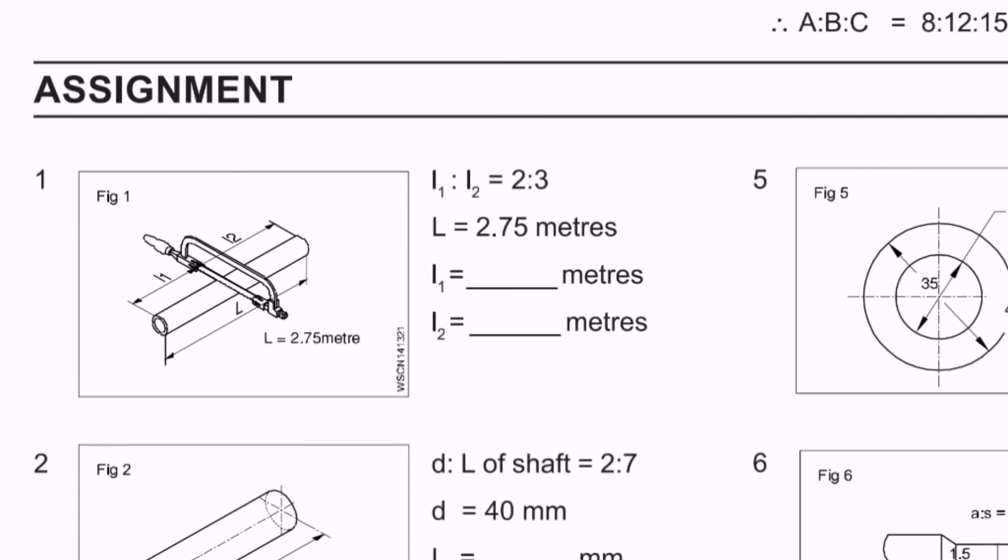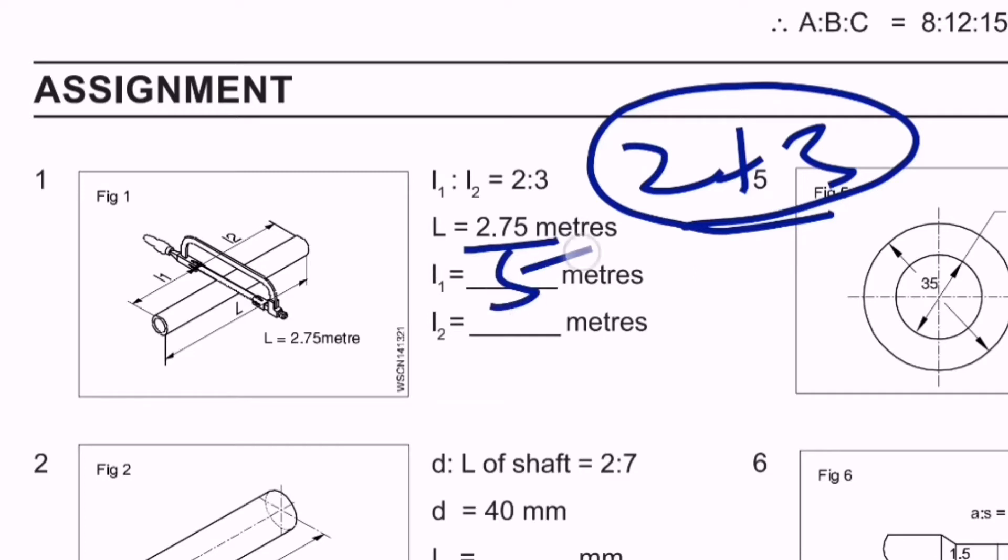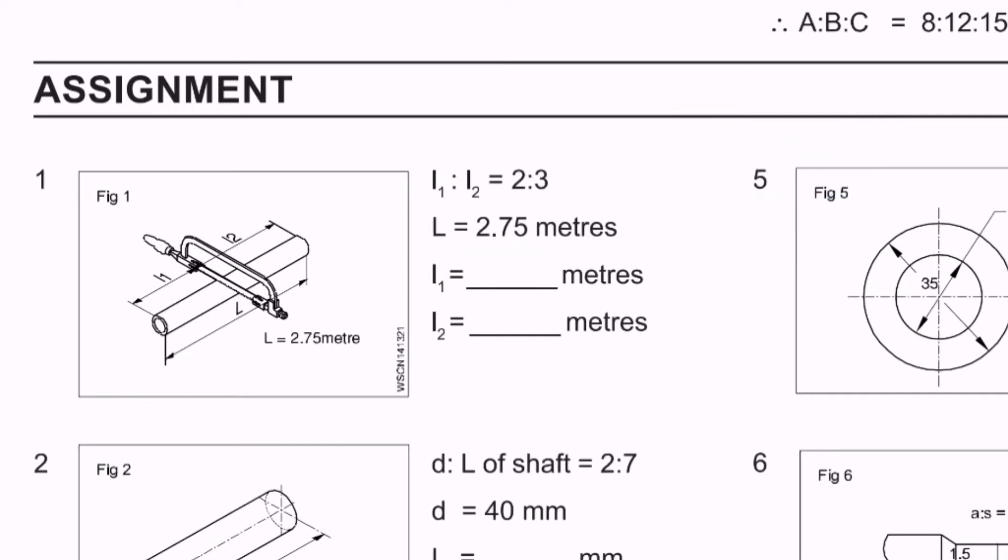First question: there is a cylinder with total length 2.75 meters. It is divided into two parts. The ratio is 2:3. The first part and second part - we need to find out their lengths. First of all, the ratio is 2:3, so the total is divided into five parts. Two plus three gives five parts.